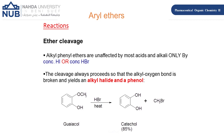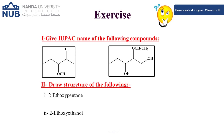For ether cleavage of aryl ethers: alkyl phenyl ethers are unaffected by most acids or alkali — only concentrated HI or concentrated HBr with heat (very drastic conditions) cause cleavage. The cleavage always proceeds such that the alkyl-oxygen bond is broken, giving an alkyl halide and a phenol. For example, guaiacol reacted with HBr and heat gives catechol plus methyl bromide.